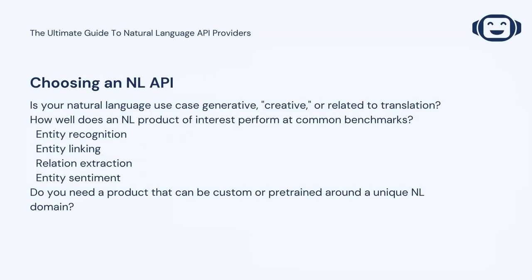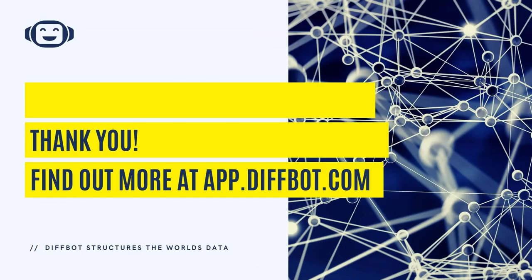To recap, there are a few questions one should address when comparing natural language products. First, is your natural language use case generative or to do with translation? Secondly, how well does the NL product perform at common benchmarks like entity recognition, entity linking, relation extraction, and entity sentiment? Third, do you need a product that can be customized or is pre-trained around your unique natural language documents? Thanks for tuning in. Be sure to like and subscribe to continue following our natural language, web extraction, and knowledge graph coverage here at DiffBot.